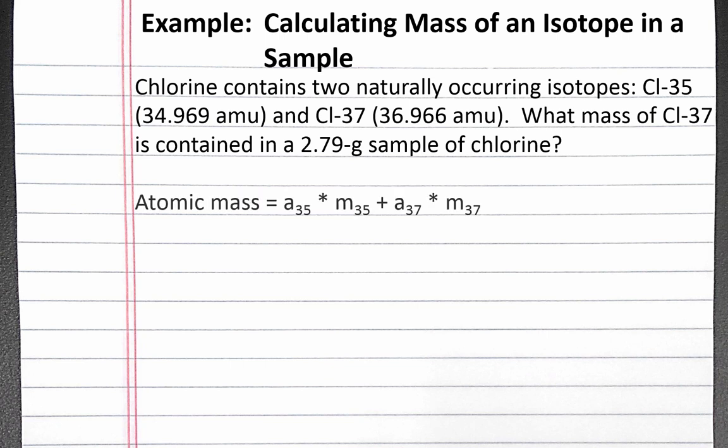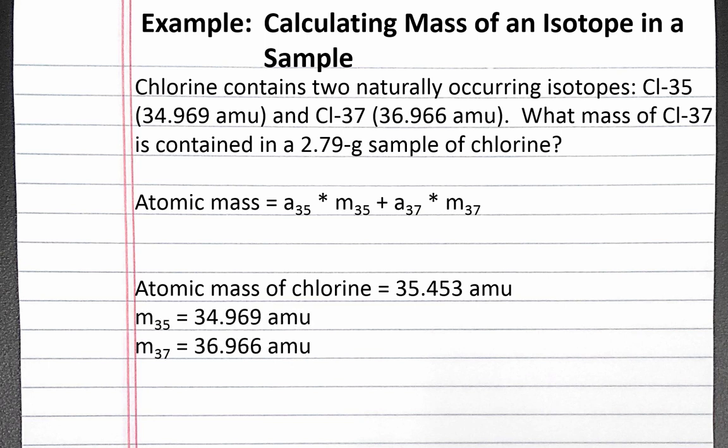Since there are two naturally occurring isotopes of chlorine, the equation is: atomic mass equals the abundance of chlorine-35 times the mass of chlorine-35, plus the abundance of chlorine-37 times the mass of chlorine-37. We know the atomic mass of chlorine from the periodic table. The masses of both isotopes are given in the problem. We don't know the abundance of either isotope yet based on the information given.